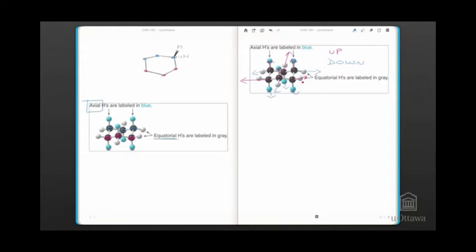A couple of things to notice along with this. When we have an equatorial up substituent of one carbon on the next carbon the substituent pointing up is axial. Equatorial up, axial up, equatorial up, axial up. They alternate. Similarly, axial down, equatorial down, axial down, equatorial down.